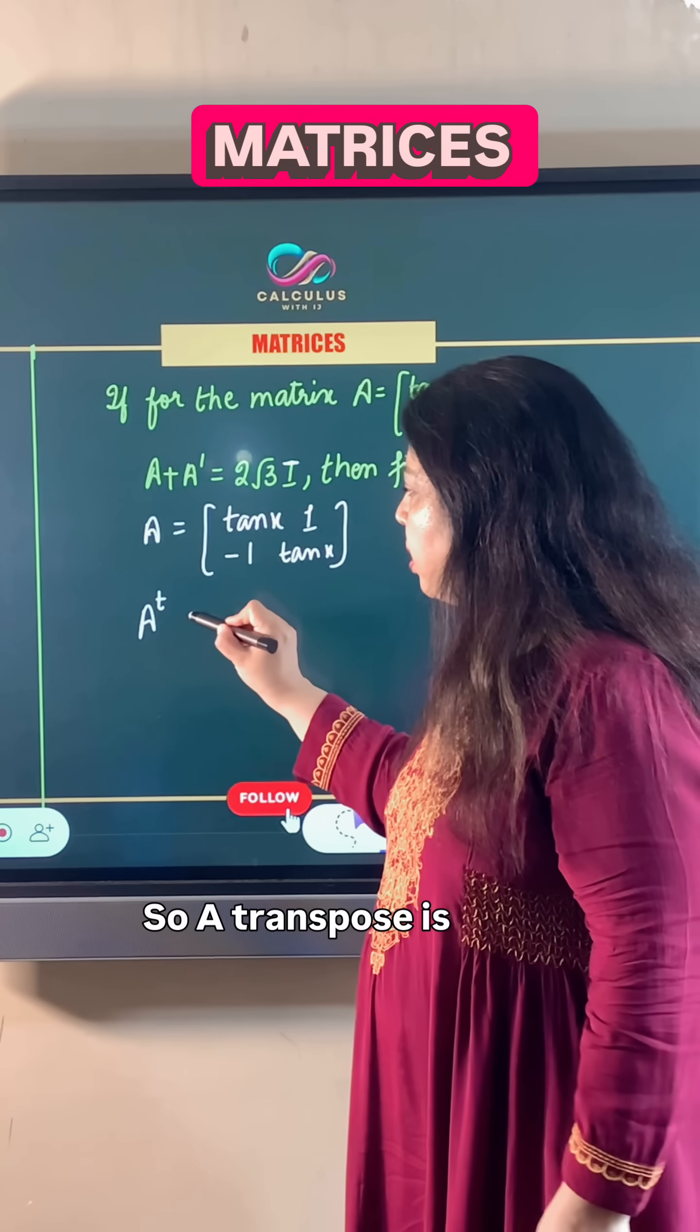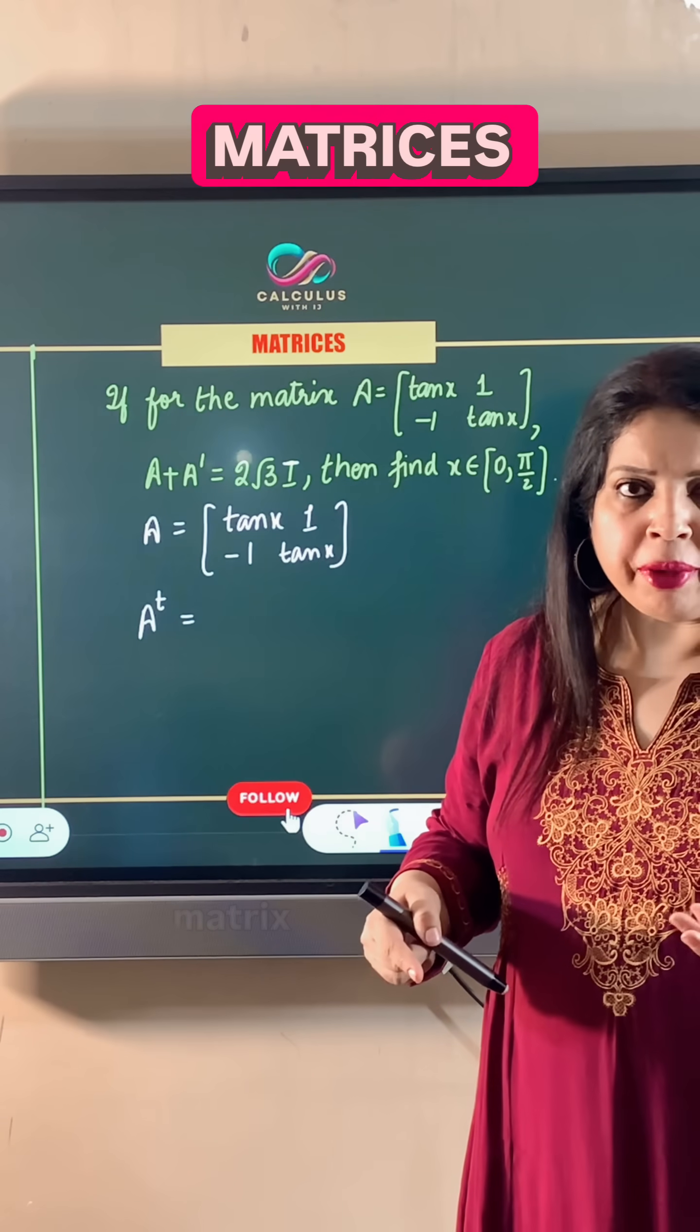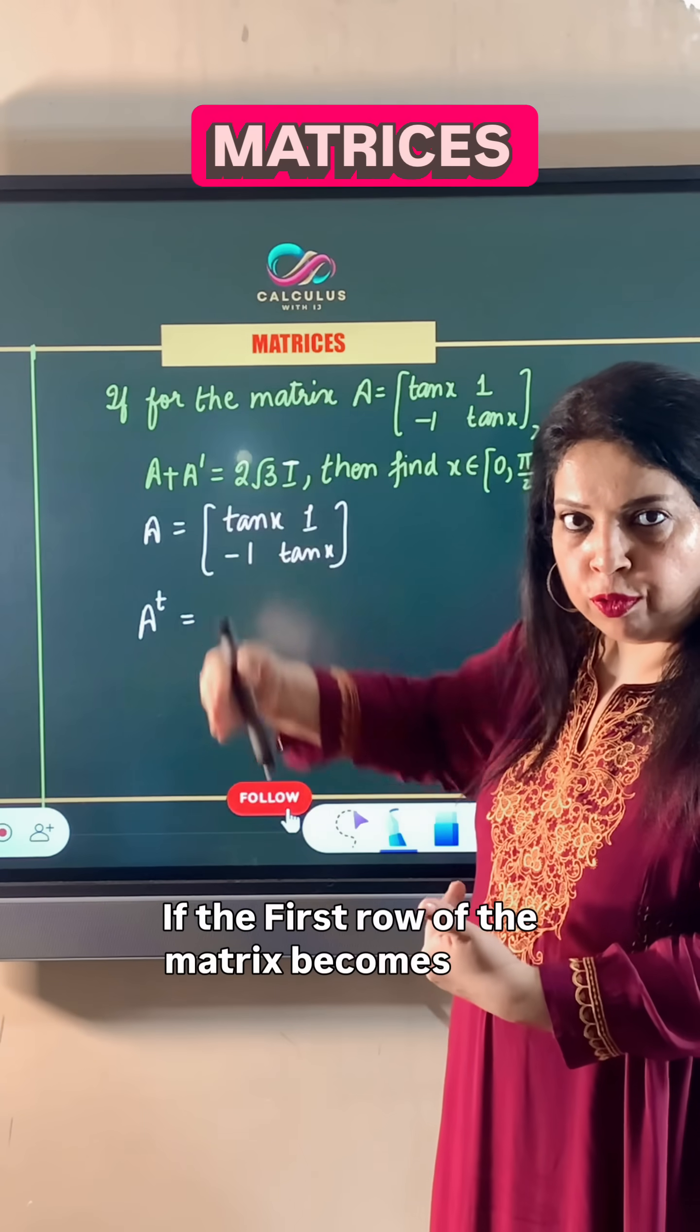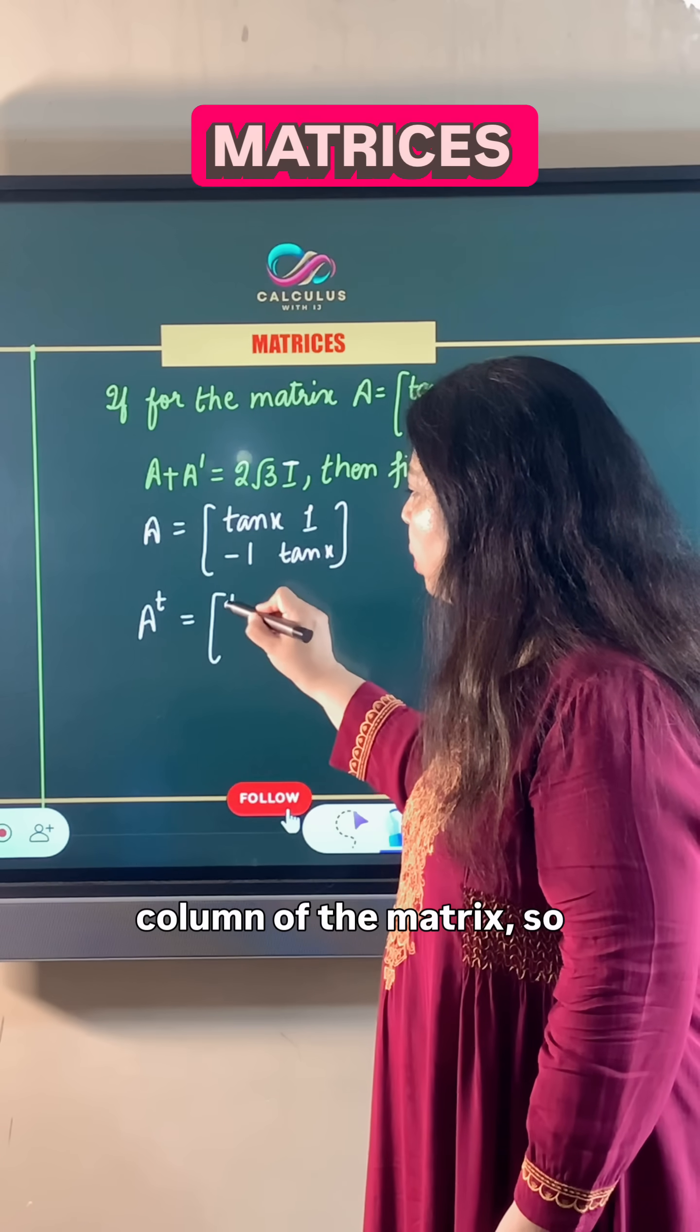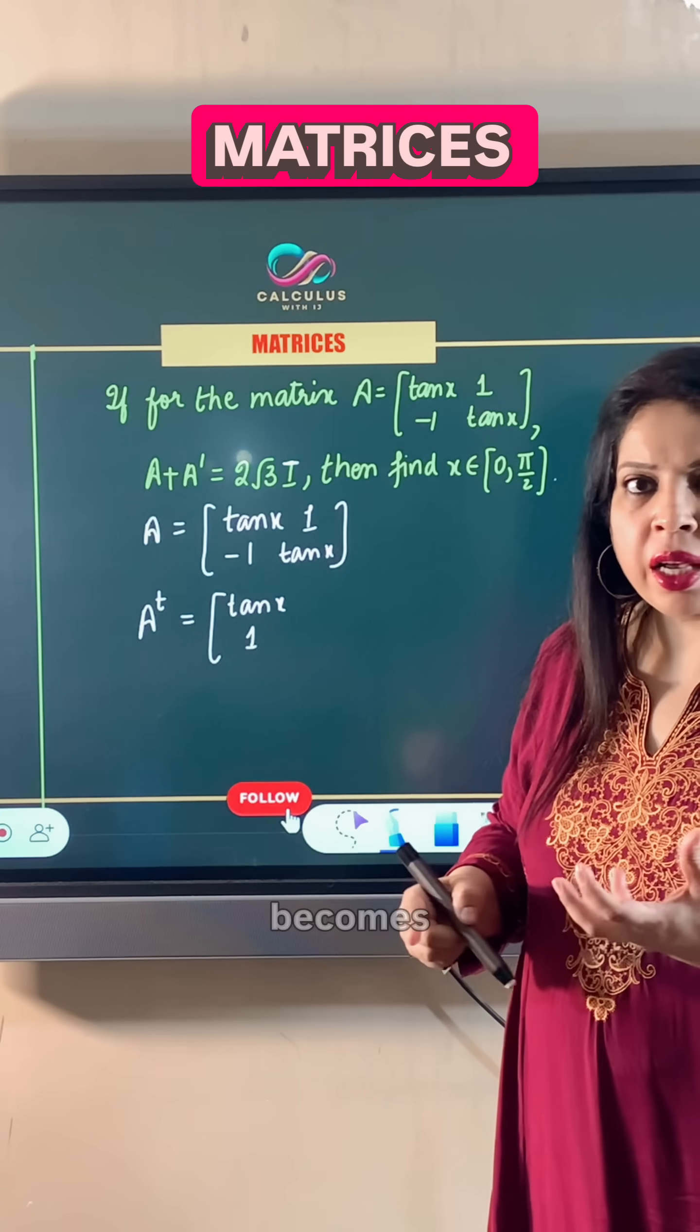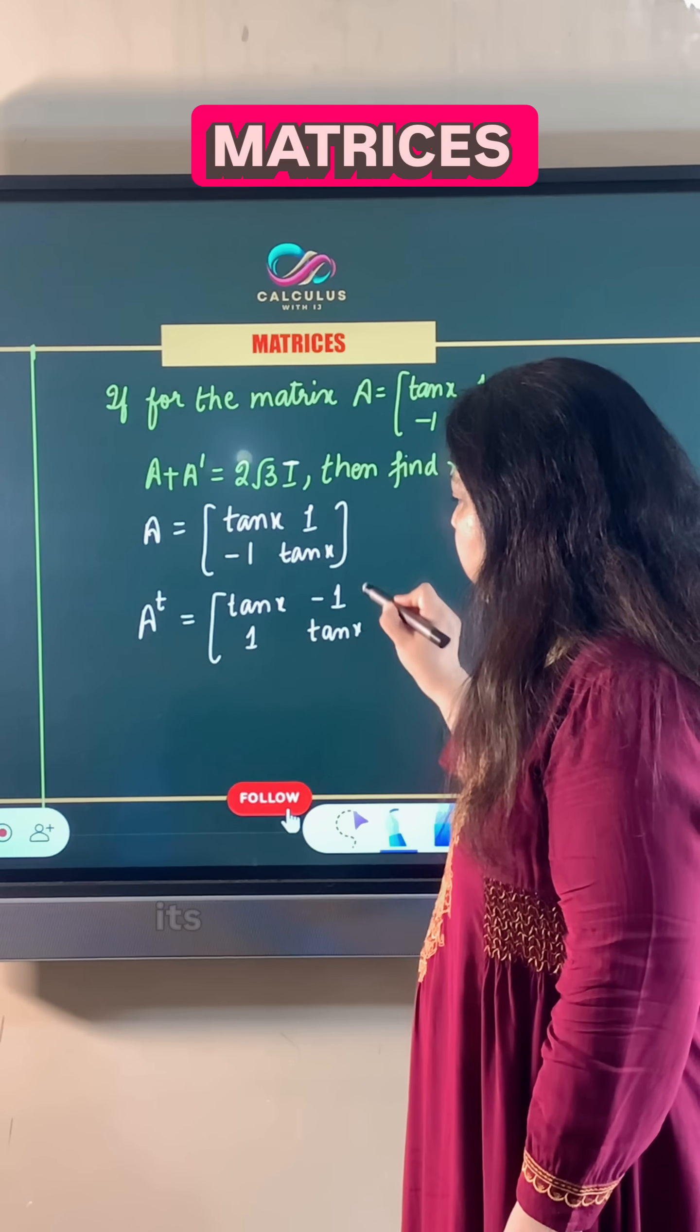A transpose is given by when we interchange the rows and columns of a matrix. If the first row of the matrix becomes the first column, so this becomes tan x, 1, and the second row becomes the second column, then we obtain its transpose.